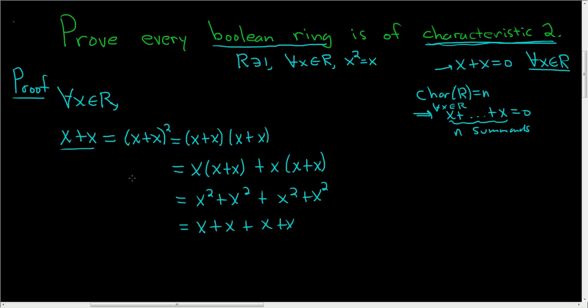So we have x plus x is equal to x plus x plus x plus x. Subtracting two of the x's, we end up with 0 equal to x plus x.